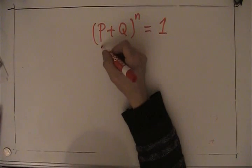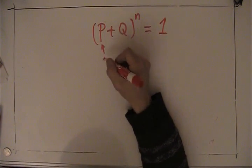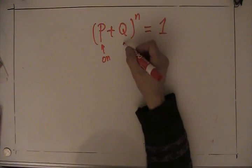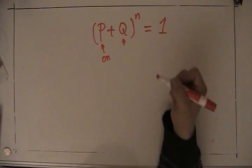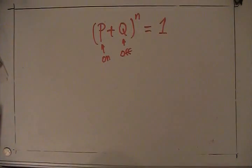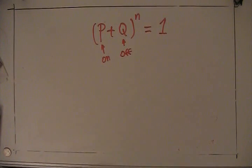Okay. Well, P is the probability of, say, being on—or yeah, on would be a good way of putting it. Like getting heads. And Q would be the probability of not getting heads or not being on. So we'll call it off. And N will be very useful for the number of trials we're going to be dealing with.